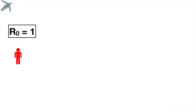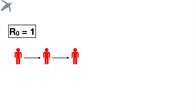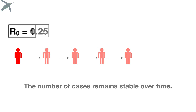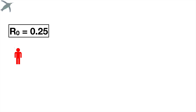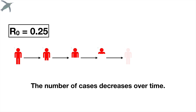Here's what it looks like when R-naught equals one. One person infects another person, and these individuals will either recover or die in a worst case scenario, but each person infects only one other person. Hopefully you can see that the number of cases remains stable over time. If R-naught is less than one — say 0.25 — obviously humans aren't infecting a quarter of another human; this is an average over a population. But over time, the number of cases will decrease and will eventually basically die out.